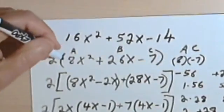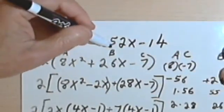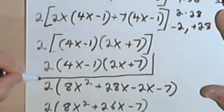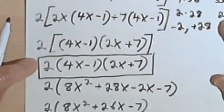Going back to the original, I had 16x squared plus 52x minus 14. So this is going to be the factored answer.